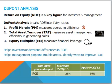First, the profit margin, measuring operational efficiency. The profit margin tells us how much net income is generated from each dollar of sales. The total asset turnover is a measure of efficiency or speed in turning over assets to generate sales. Finally, the equity measure is a measure of financial leverage.